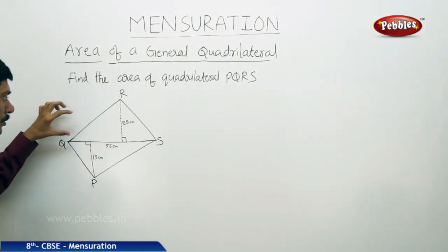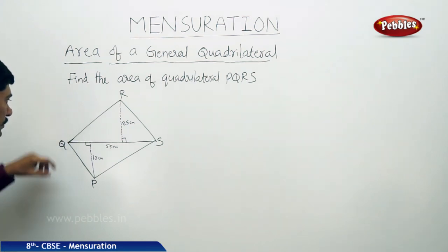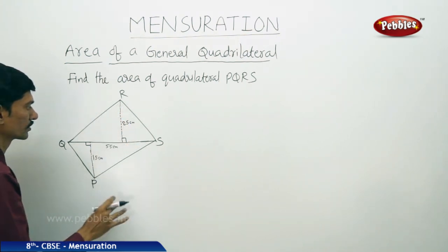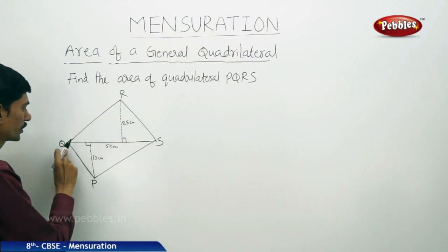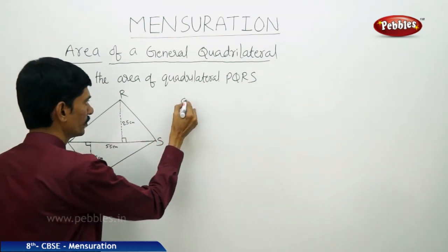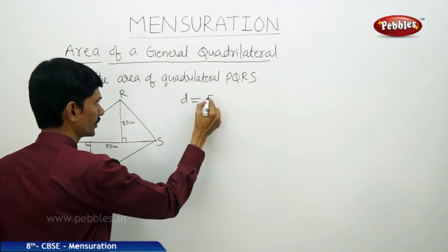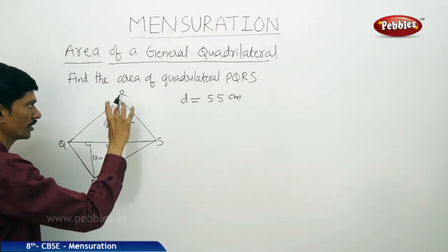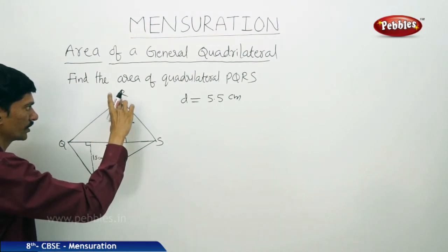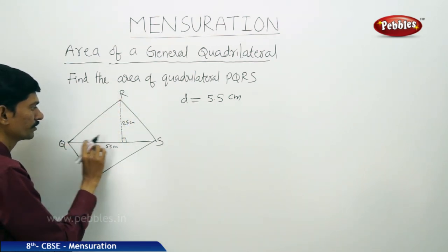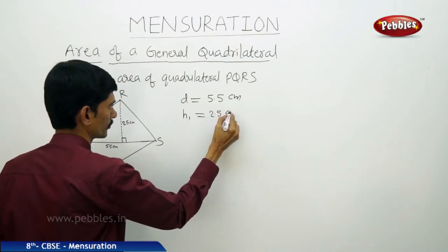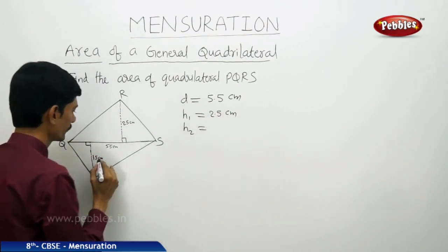Let us find the area of quadrilateral PQRS. The diagonal QS divides it into two triangles: QRS and QPS. The length of the diagonal is 5.5 centimeters, so d equals 5.5 cm. The perpendiculars drawn from opposite vertices R and P to diagonal QS are h1 equals 2.5 centimeters and h2 equals 1.5 centimeters.